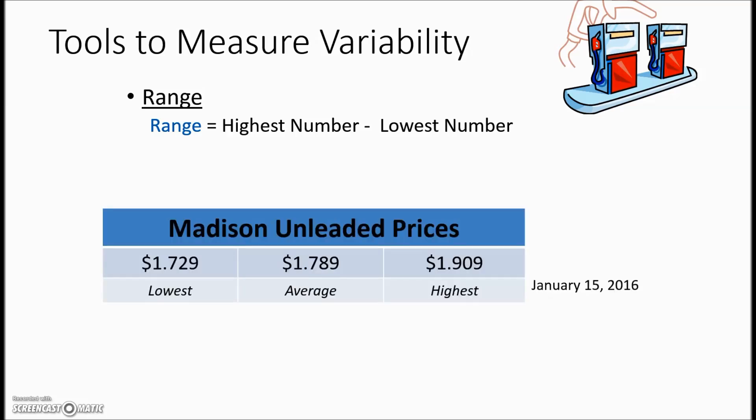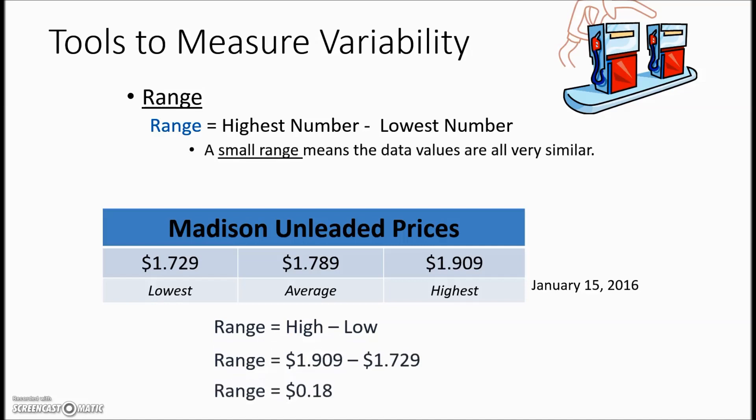Here we have an example of gas prices in Madison, Wisconsin. The highest and the lowest given so determine the range value. We'll take the highest $1.99 and subtract the lowest $1.729 to get a range of 18 cents. A small range means that the data values are very similar. A large range means that the data values are dissimilar and to know whether in this example 18 cents is small or large we would need to repeat this over a period of time to know what would be the typical variation between the numbers.